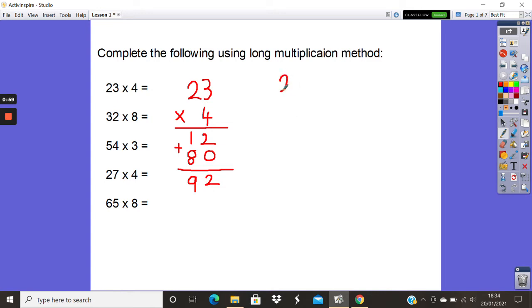The other method you can use is the one where we carry over. So if I write this one out again, I've got 23 times 4. 3 times 4 is 12 so we put the 2 in our ones column and then carry over the 1 into our tens column.